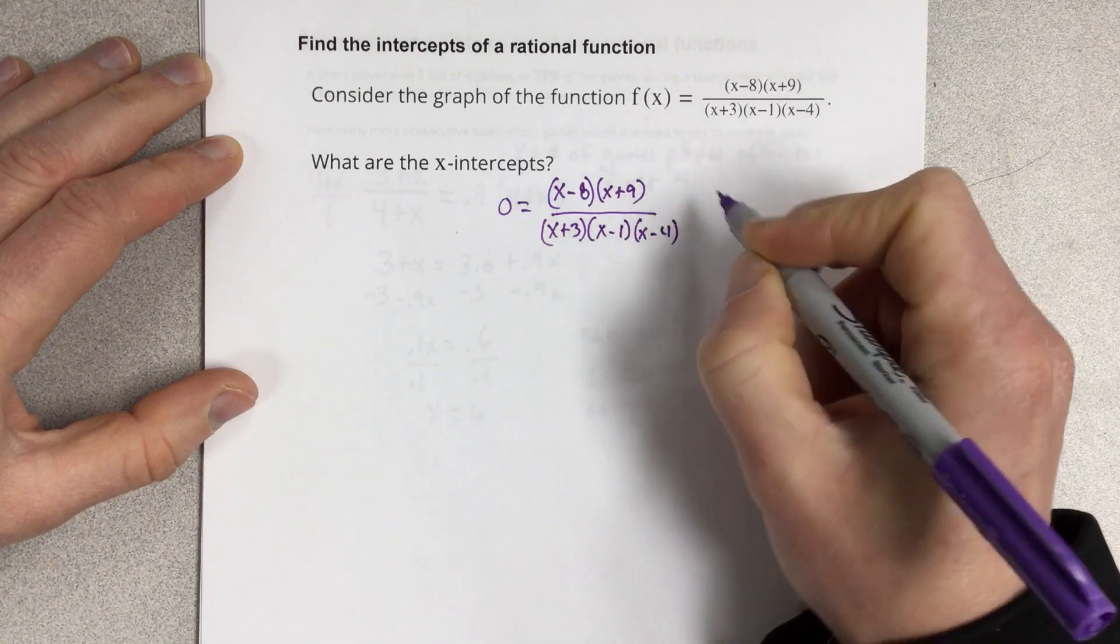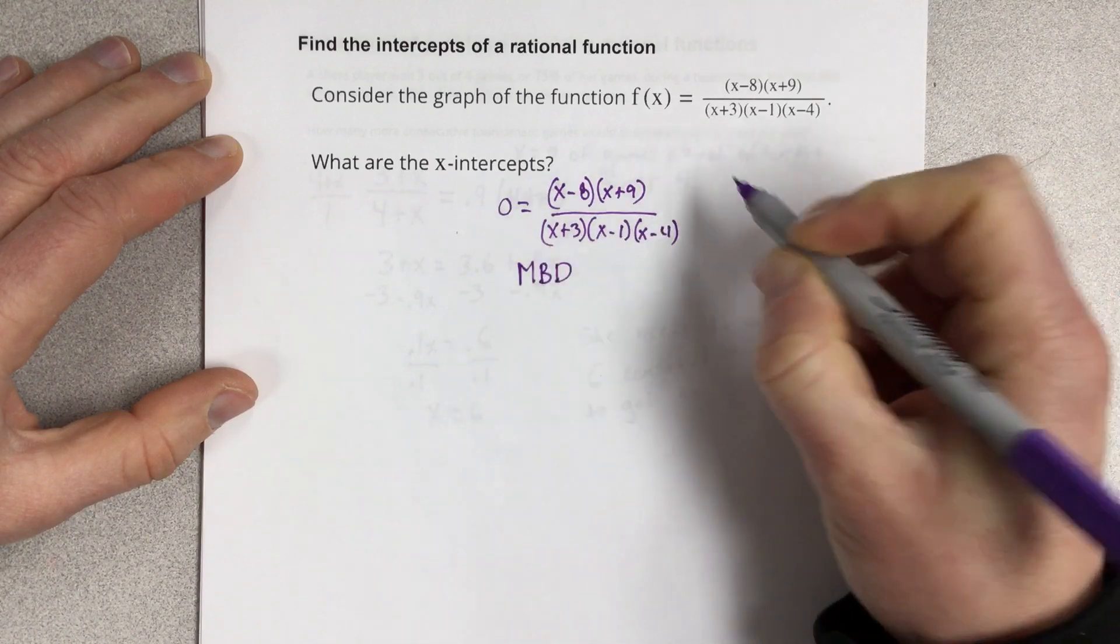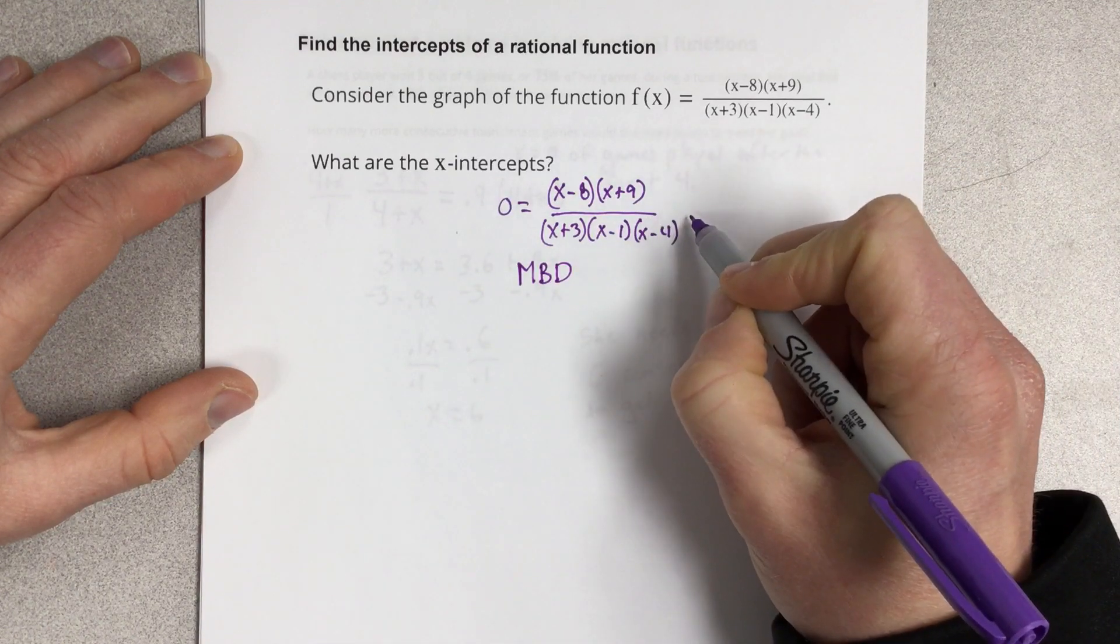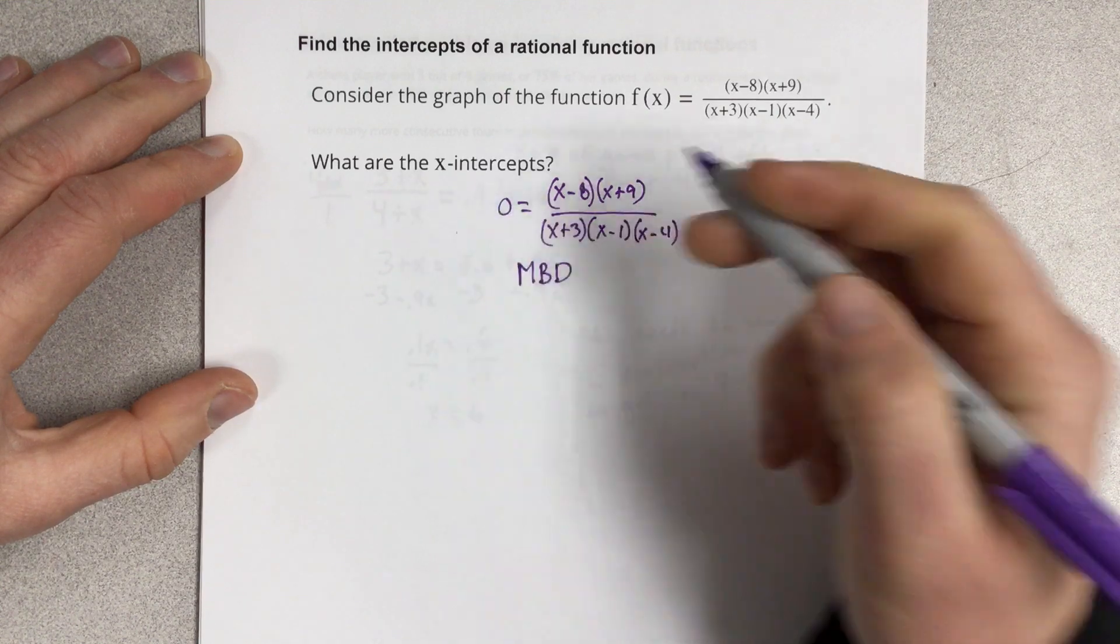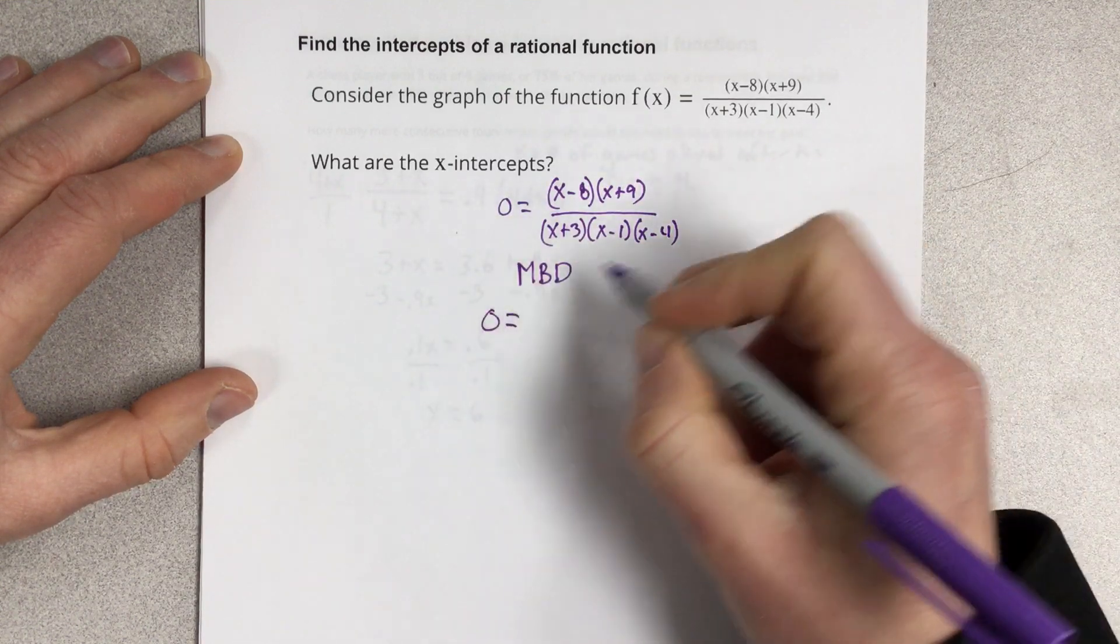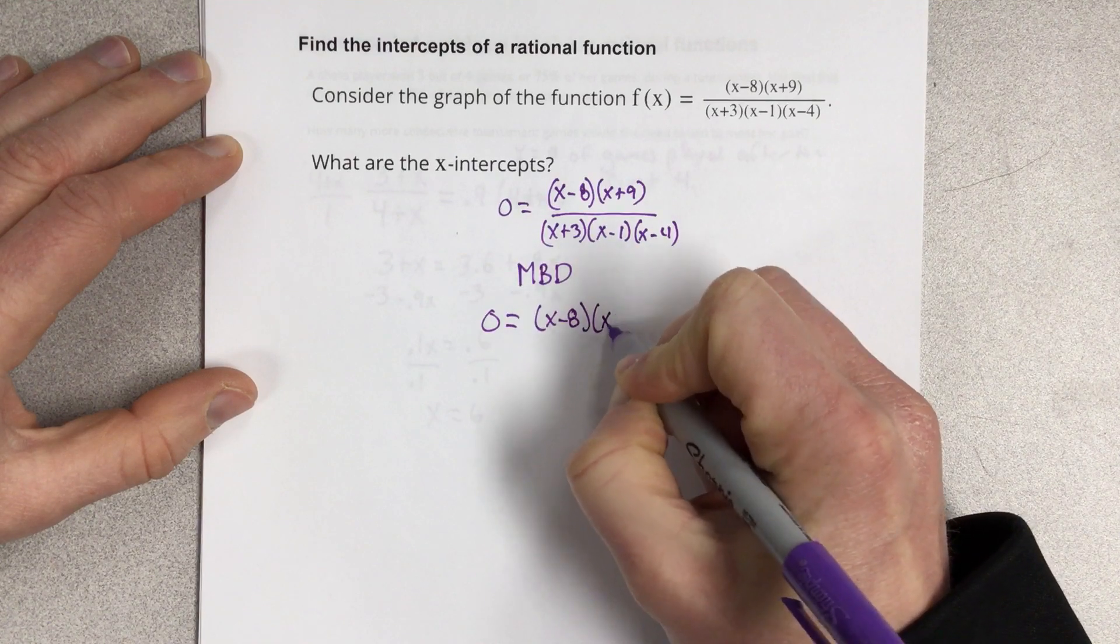And the first thing we'll do is multiply by the denominator. So I'm just going to say MBD, multiply by the denominator here. When we do that on the right side, it will cancel. When we do it on the left side, we get 0. So that's going to be 0 equals (x - 8)(x + 9).